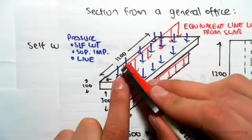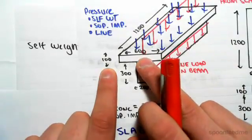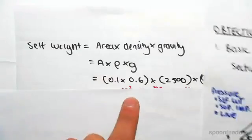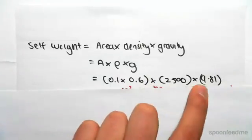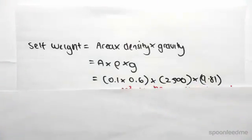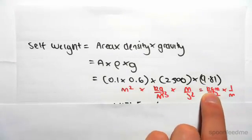And that will give us the line load. So you can see it's 0.1 by 0.6 for the slab in meters, times by density which is 2500, times by g which is 9.81 meters per second squared. Unit-wise, we would be left with kilograms meter per second squared times by one over meter, which is newtons per meter.